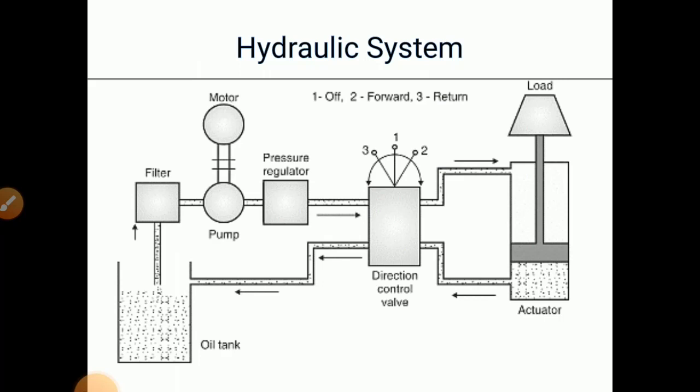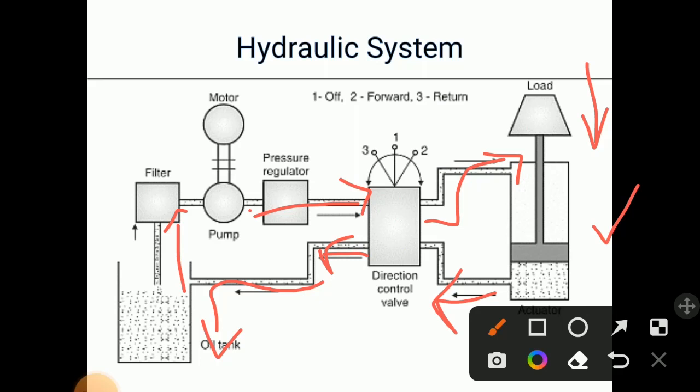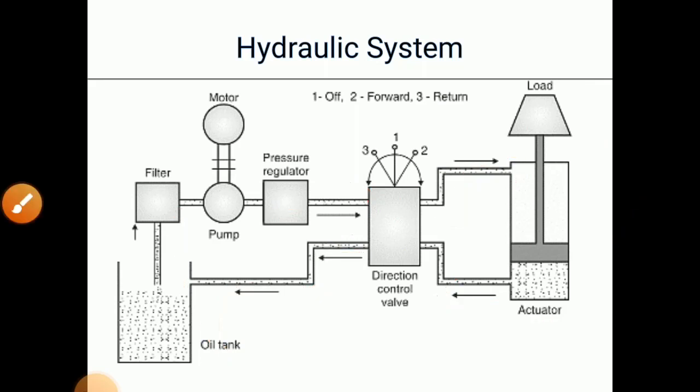So this is one hydraulic system which is shown over here. You can check the diagram. Now this is the actuator over here. So what happens because of this application of load, the fluid flows in this direction. It flows through this direction control valve and goes to this oil tank. And again filtered with the help of this filter and from this pressure regulator again given to this actuator. So like this hydraulic system works so that this load can be moved up and down.